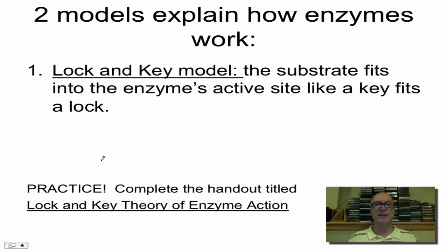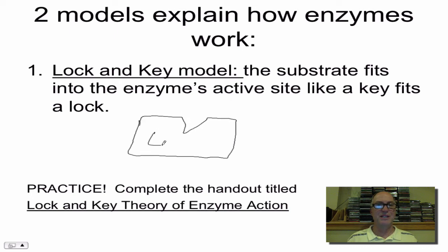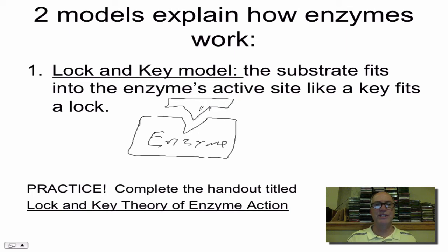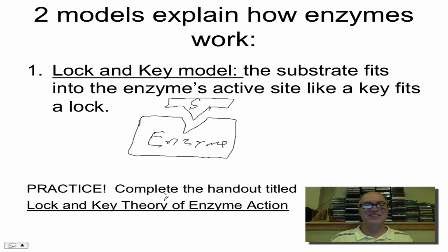The lock and key model explains how the substrate fits into an enzyme. An easy way to draw an enzyme is like a shape with an active site. A substrate in the lock and key model would have a groove — like a triangle — that fits like a key right into a lock. So the substrate binds nicely to the enzyme. You have a worksheet called the lock and key theory of enzyme action — go ahead and complete that right now, and then continue the video.